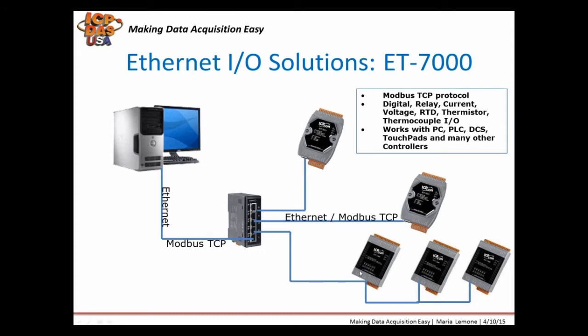One cable goes to one port, one cable goes to the other port. Even if the one in the middle was off, the communication can still get through. Ethernet IO can communicate up to 100 meters, and can communicate greater distances through Ethernet switches. Our dual port Ethernet IO have a two-port Ethernet switch inside.